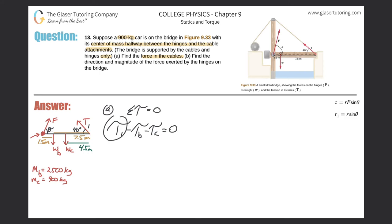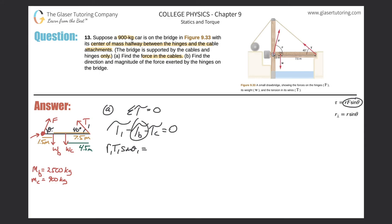All three torques can be expanded using R·F·sinθ. So torque one equals R₁·F₁ (which is the tension T₁) times sinθ₁. Let me move the negative torques to the right-hand side. This will equal torque B: R_B · F_B (the weight of the bridge) · sinθ_B, plus R_C · F_C · sinθ_C.